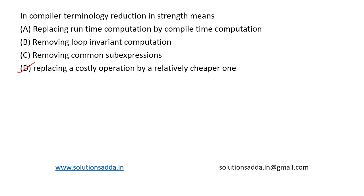Some examples of strength reduction are: exponentiation is replaced by multiplication, and multiplication is replaced by addition. These are examples of strength reduction. Based on the options, option D is the right choice.